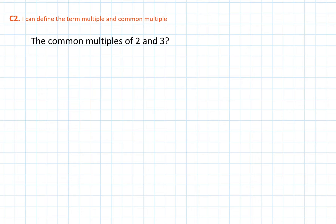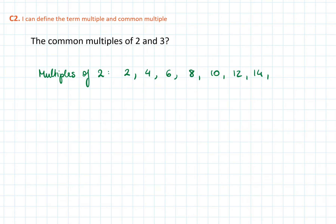In this video, I will continue talking about multiples and lowest common multiples. The video will cover C2 and F5. When the question asks you to find the common multiples of 2 and 3, the best thing to do is start with just listing the multiples of 2 and 3 separately.